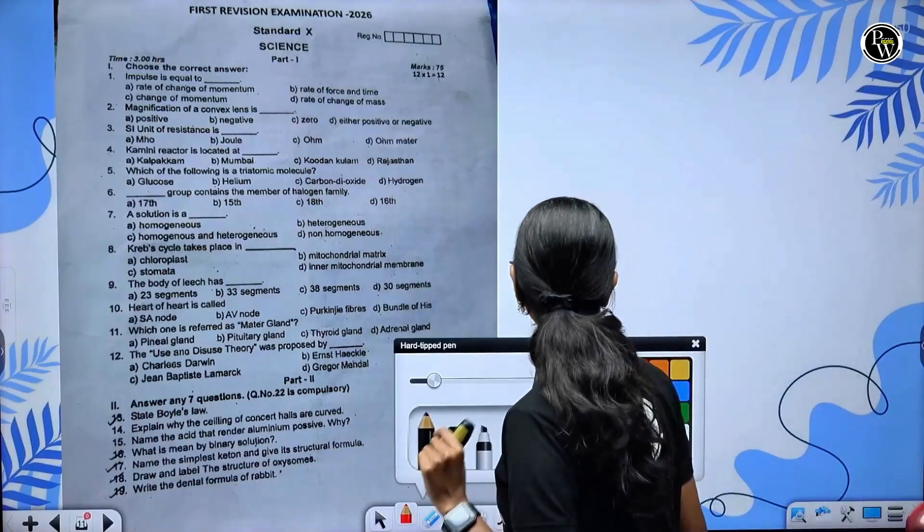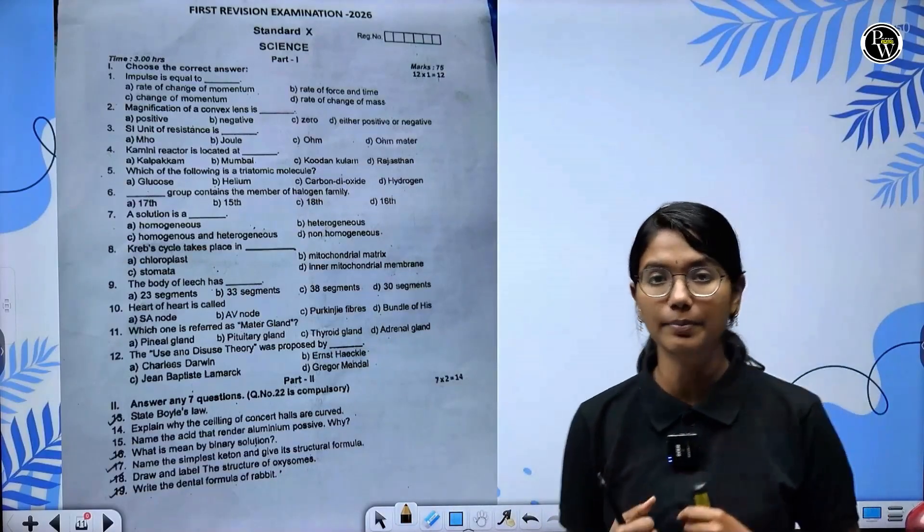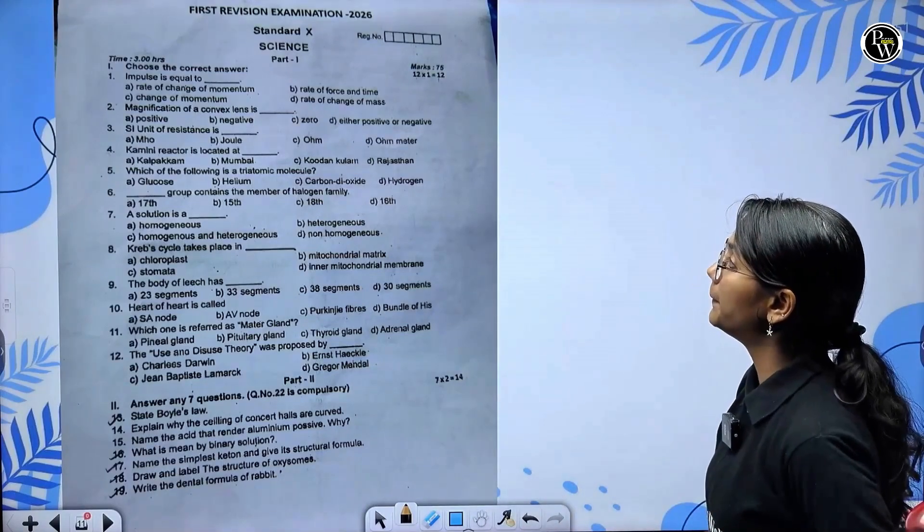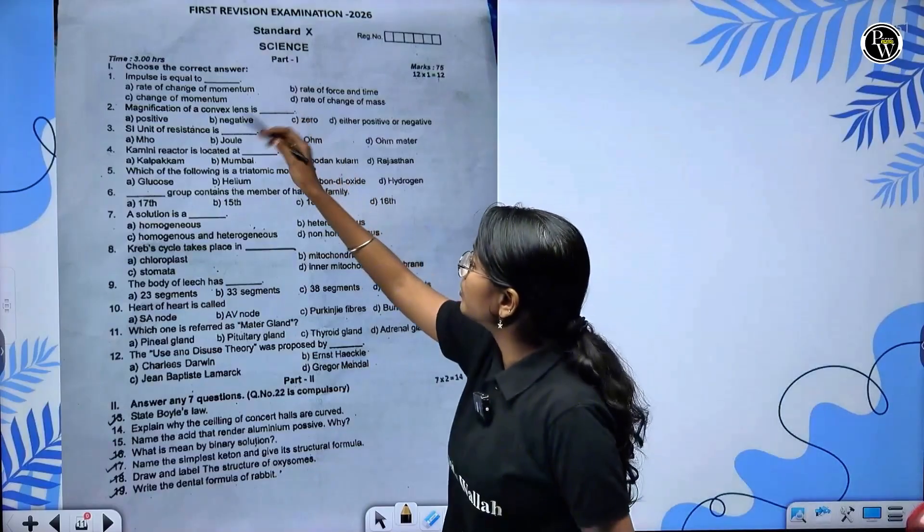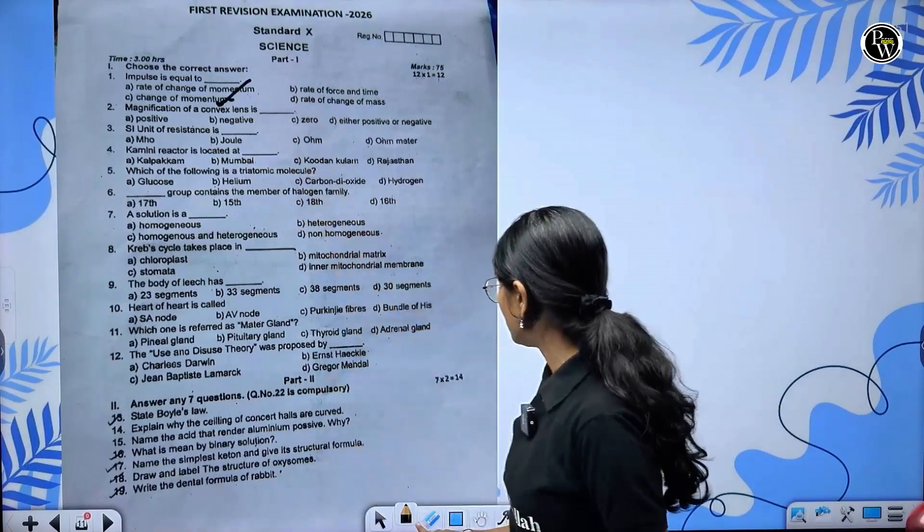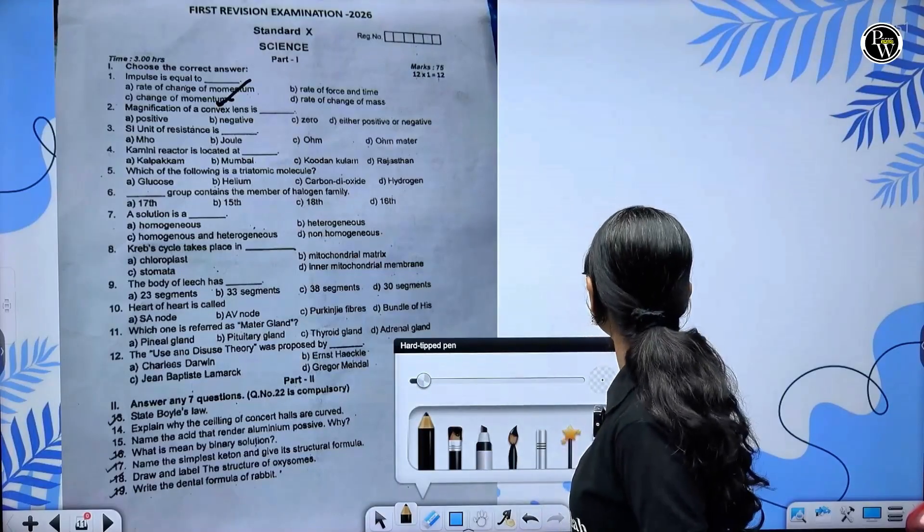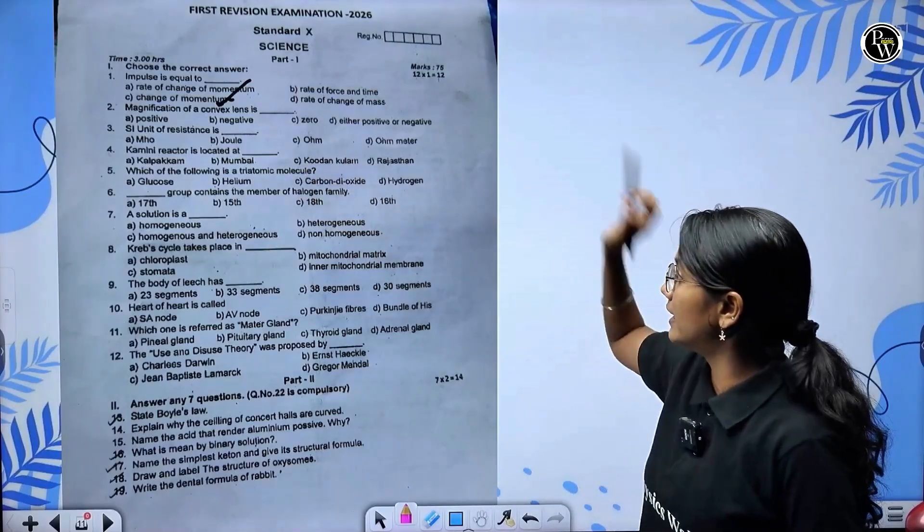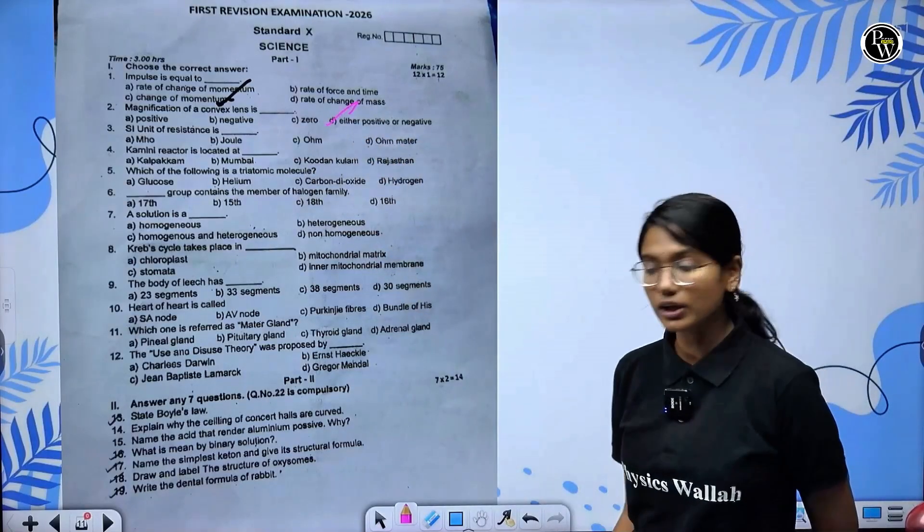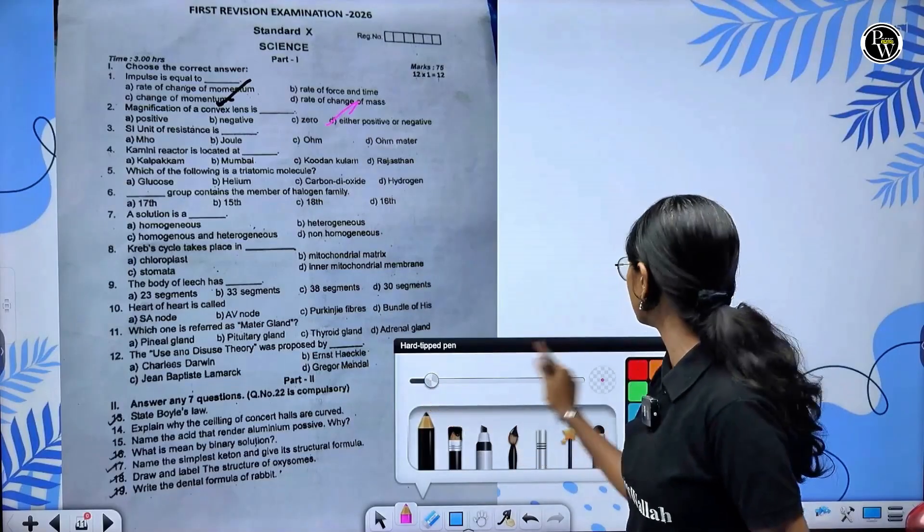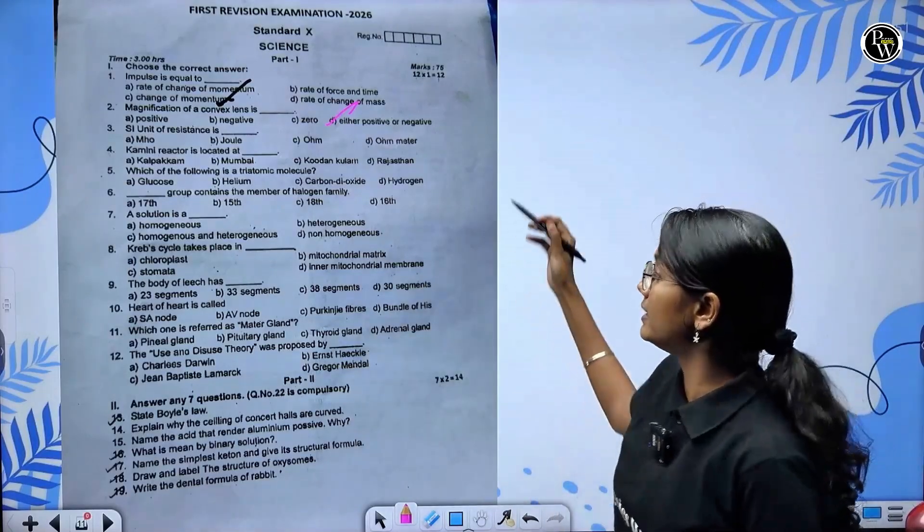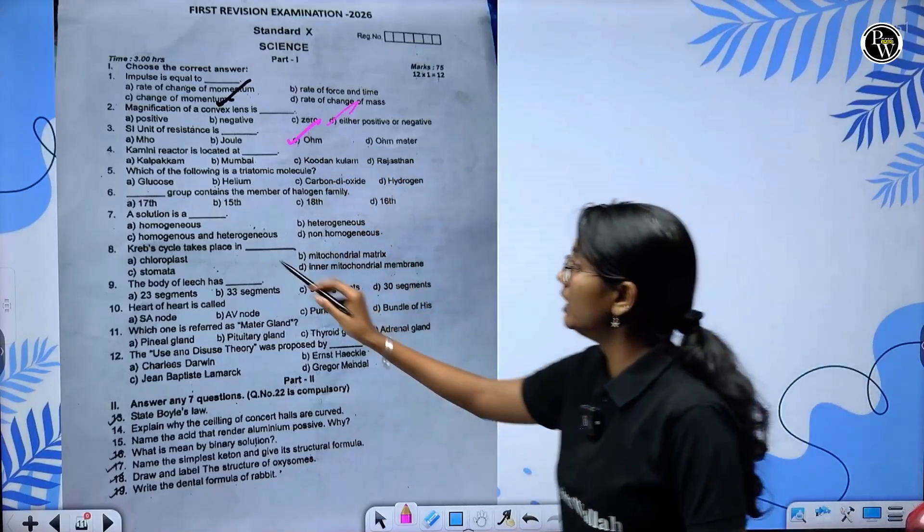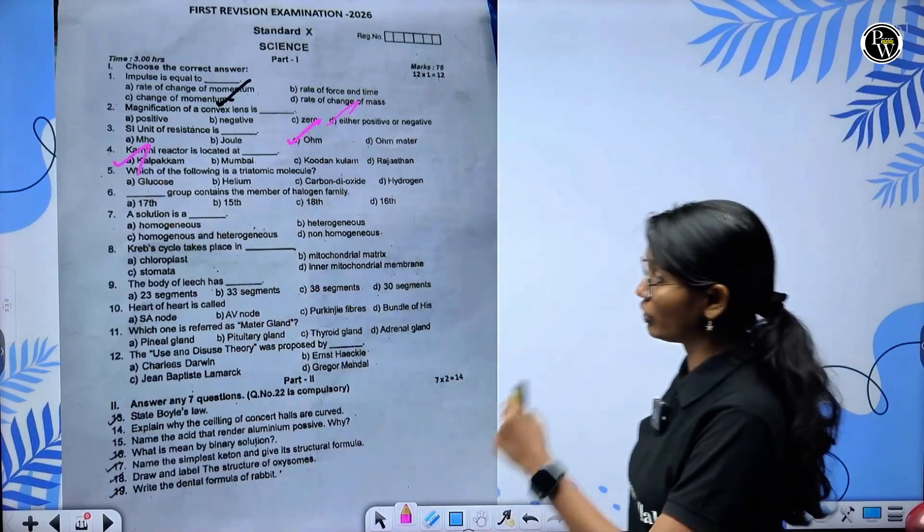We will see - number check. First, one marks - there are 12 one mark questions. Impulse is equal to change of momentum. Magnification of a convex lens is either positive or negative. SI unit of resistance is ohm. Kalpakkam reactor is located at Kalpakkam.